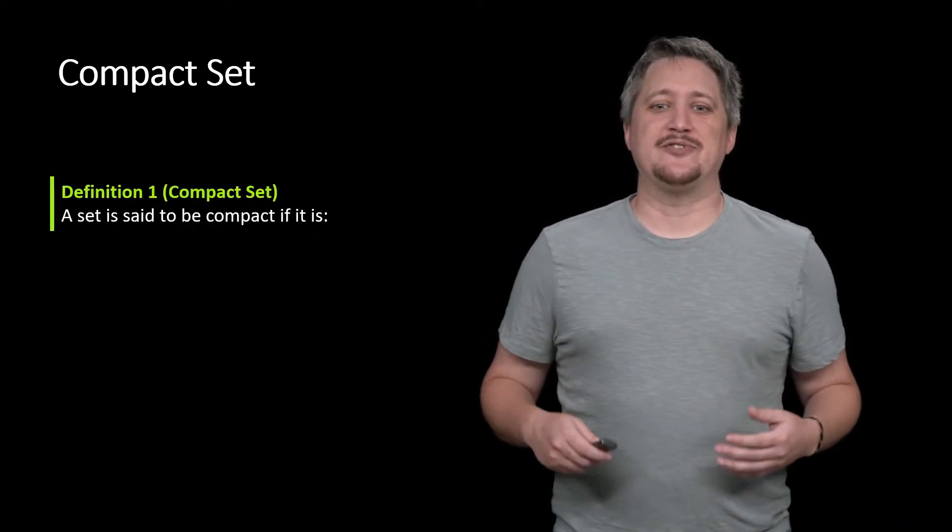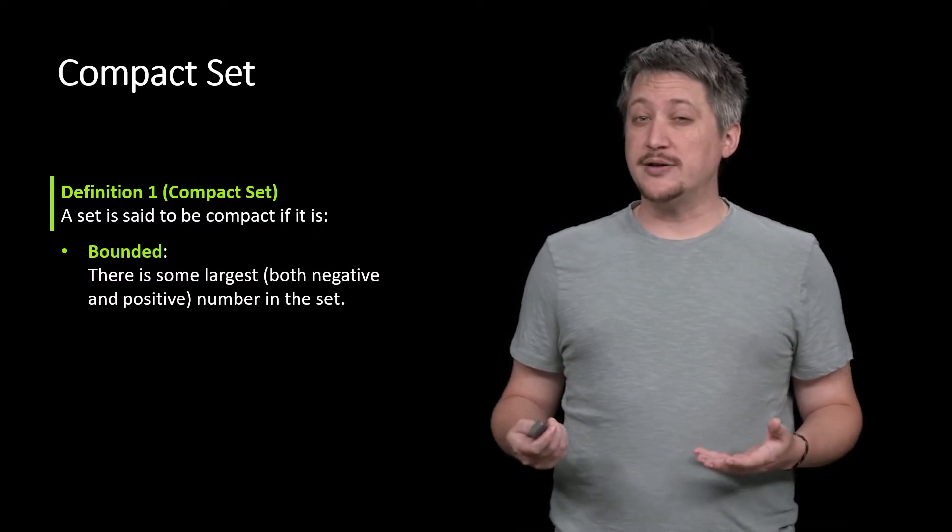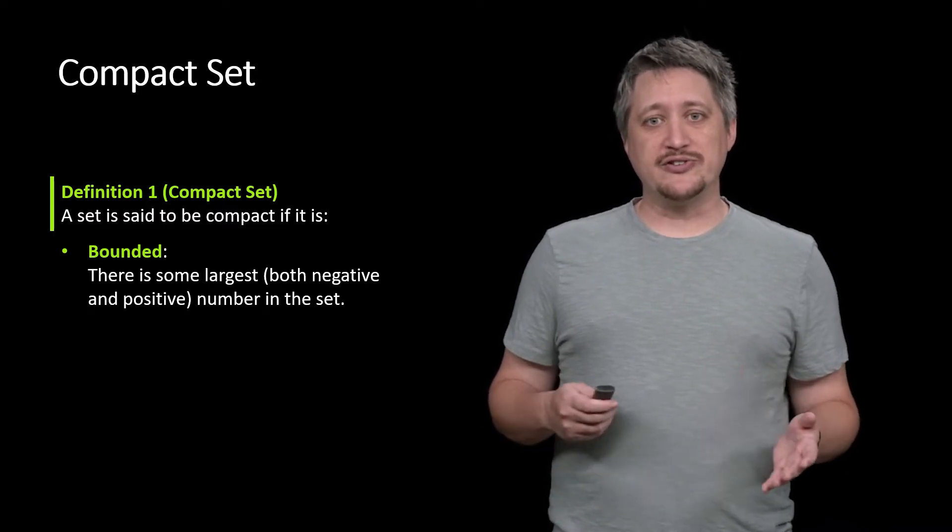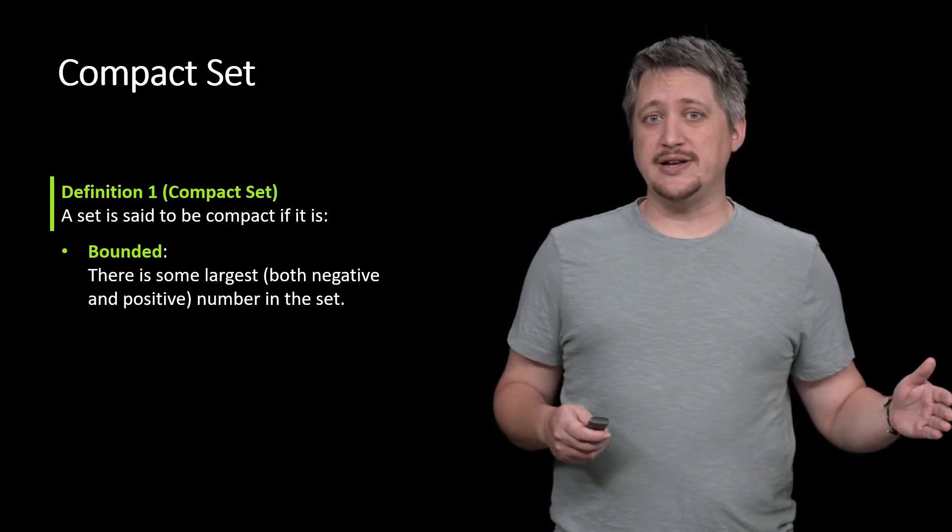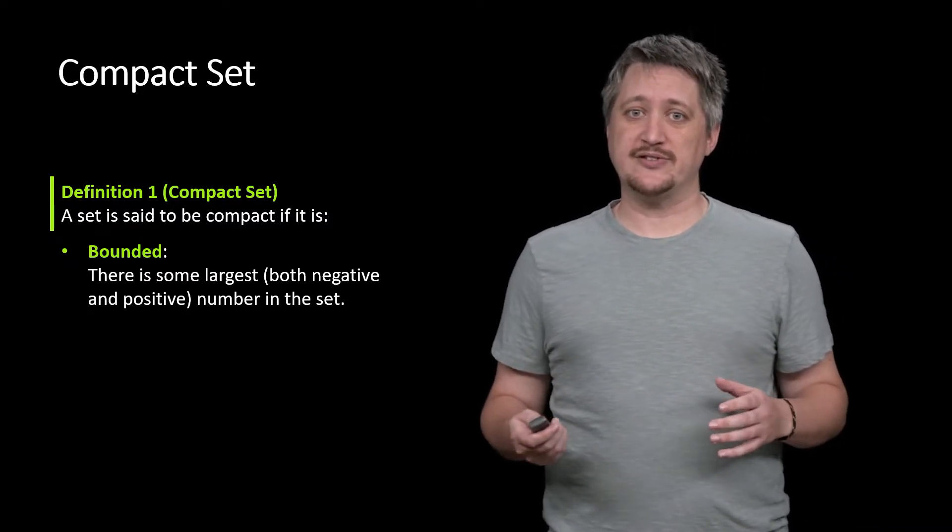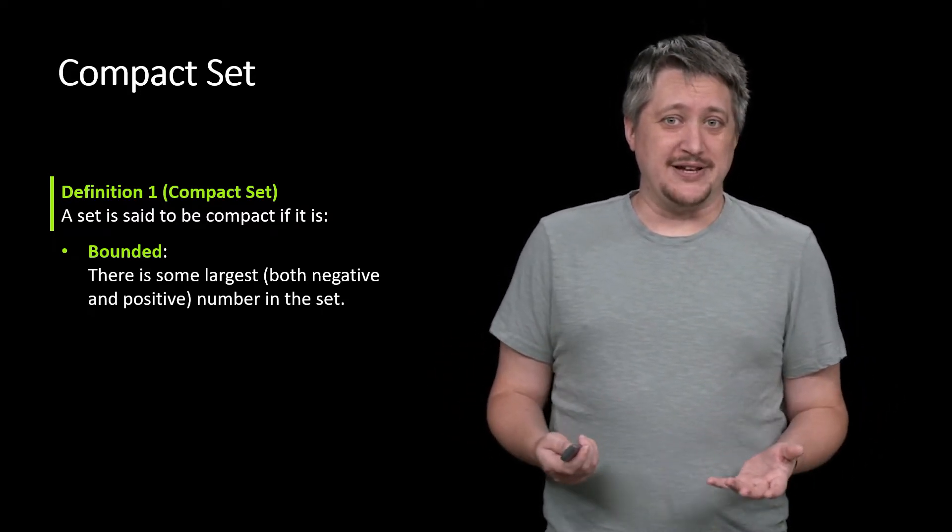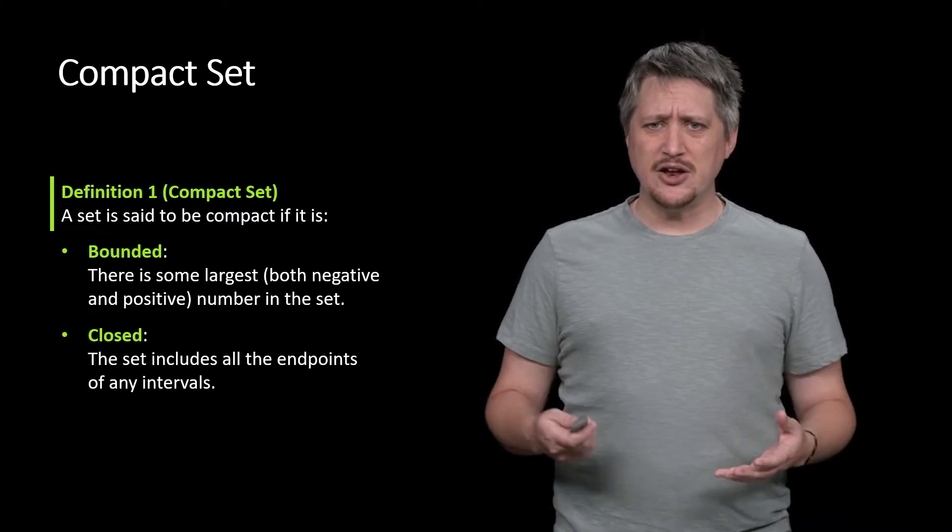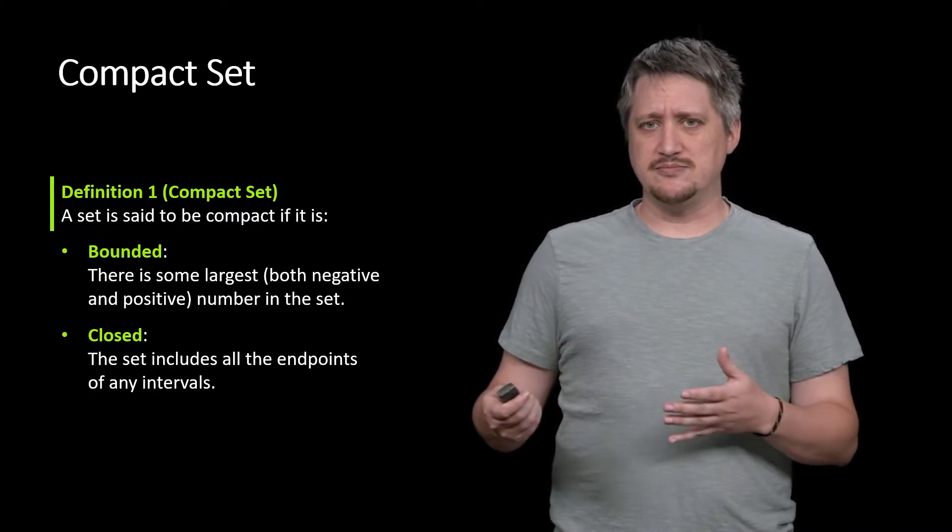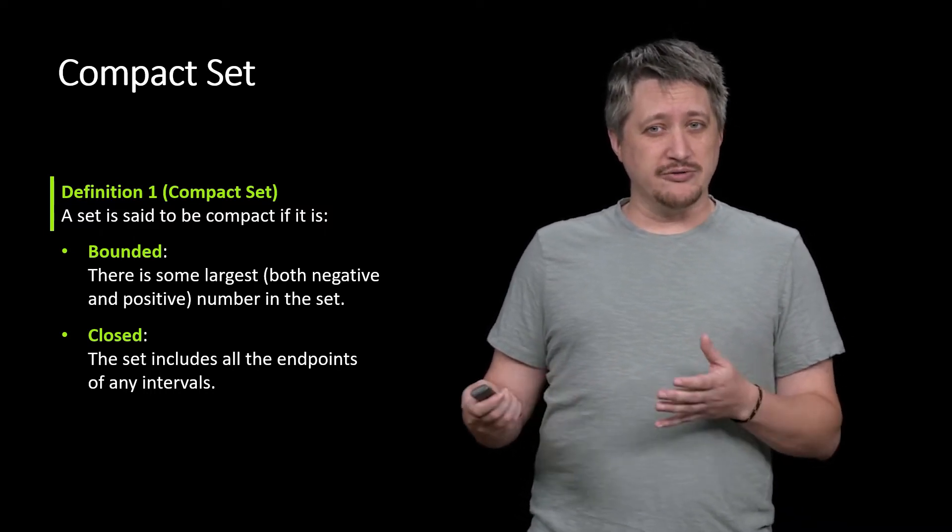Compact set. We call a set compact, we say it's compact if it has two properties. One, it needs to be bounded. When we say bounded, we think of this as being a largest number, both to the right and to the left. Some sort of biggest in both directions values. Basically, doesn't go to infinity. That's why we're calling it bounded. It also needs to be closed, which for our sake, we're going to be saying that a set is closed if all of the intervals have all of their endpoints.